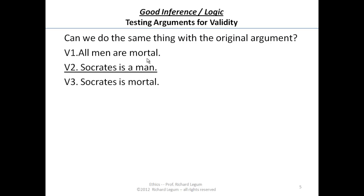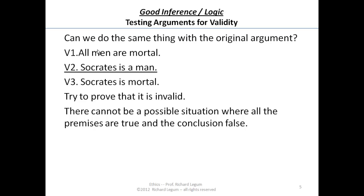Can we do the same thing with the original valid argument? Try to prove it's invalid. I want to suggest you can't, because there can't be a possible situation where the premises are true and the conclusion is false. Any situation in which you describe the world as having only mortal men — all men are mortal — and Socrates is a man, you have to accept the conclusion.